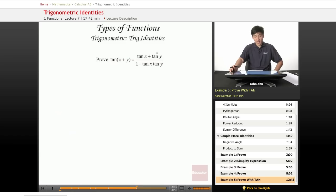Now let's look at a proof with tangents. We're trying to prove that tangent of x plus y equals tangent of x plus tangent of y over 1 minus tangent of x tangent of y, which is sort of like a trig identity in itself.